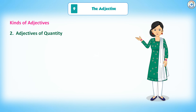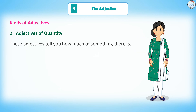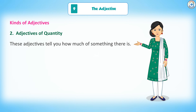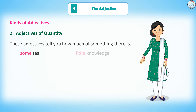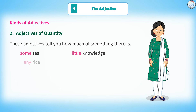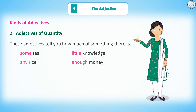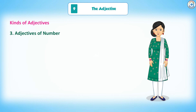2. Adjectives of quantity: These adjectives tell you how much of something there is. Examples: some tea, little knowledge, any rice, enough money.